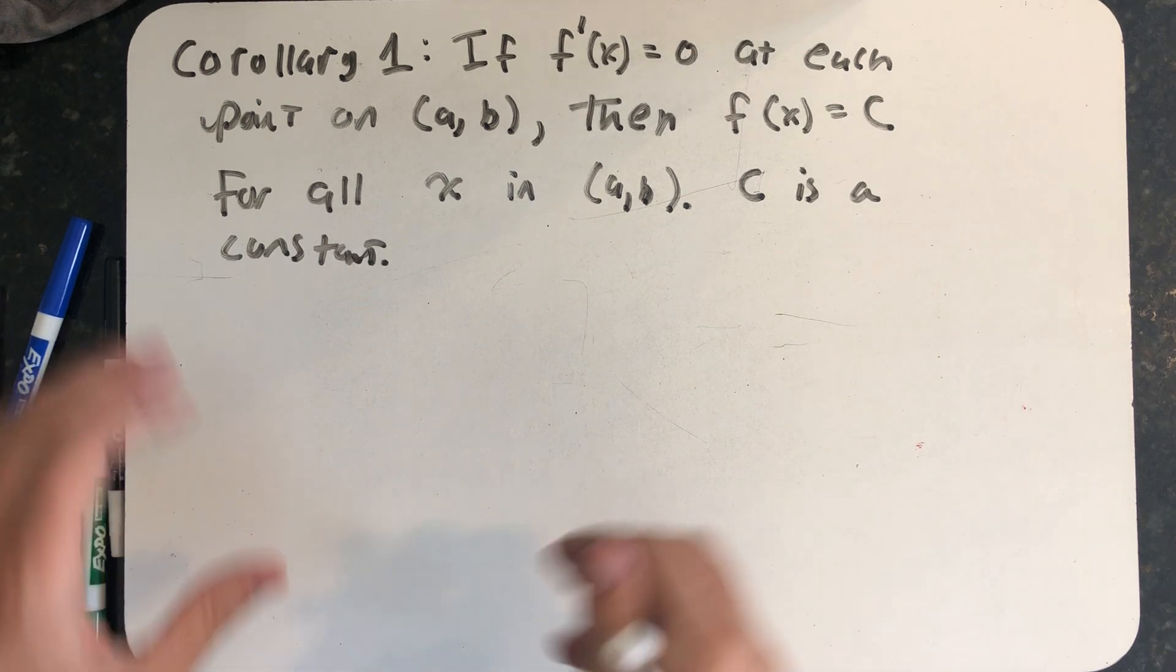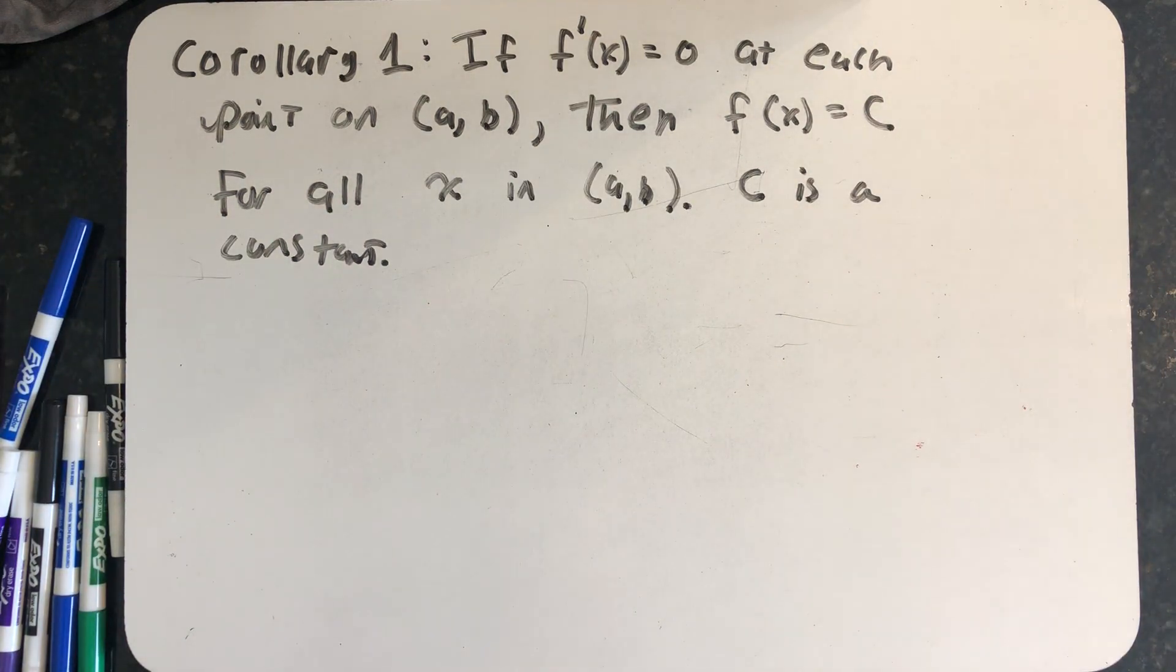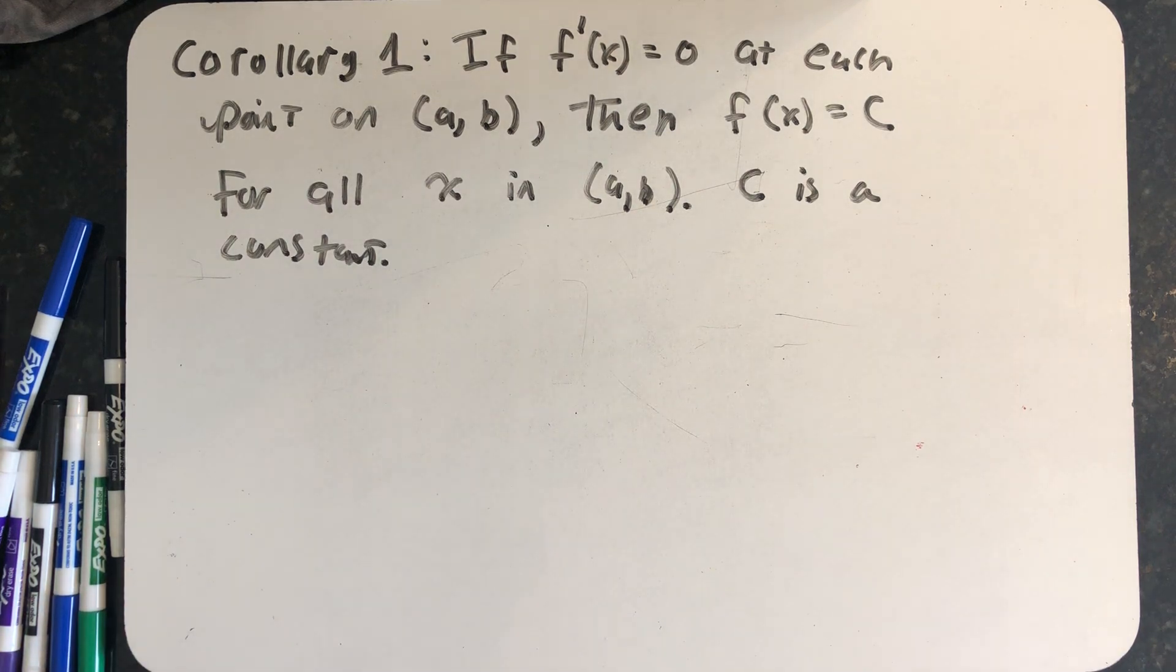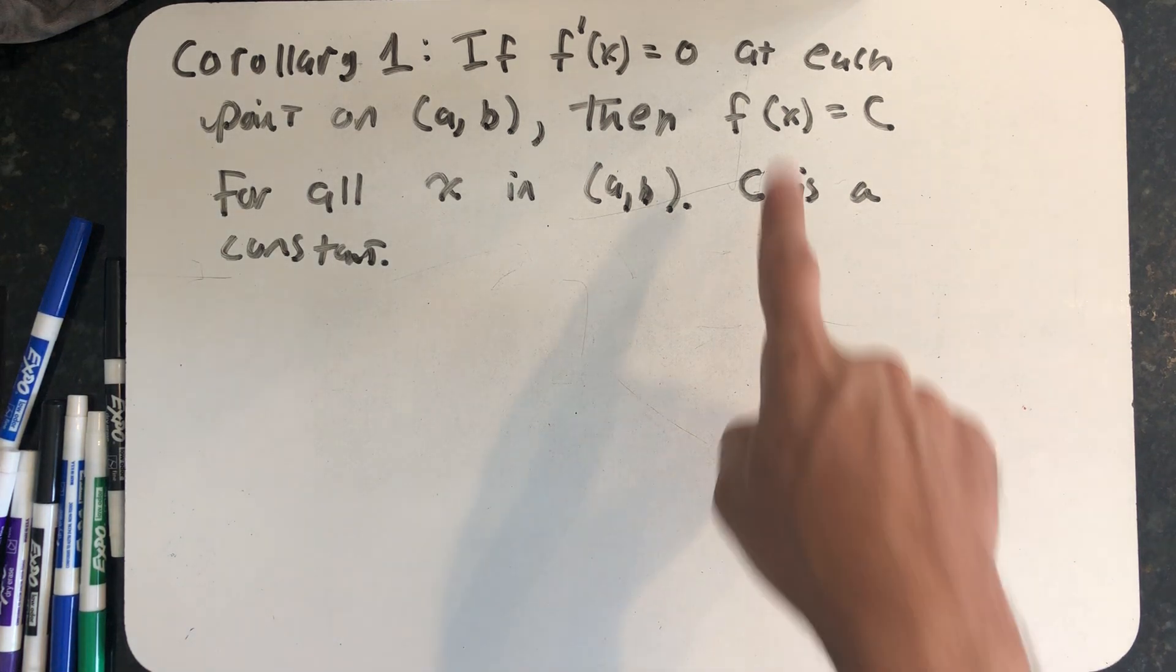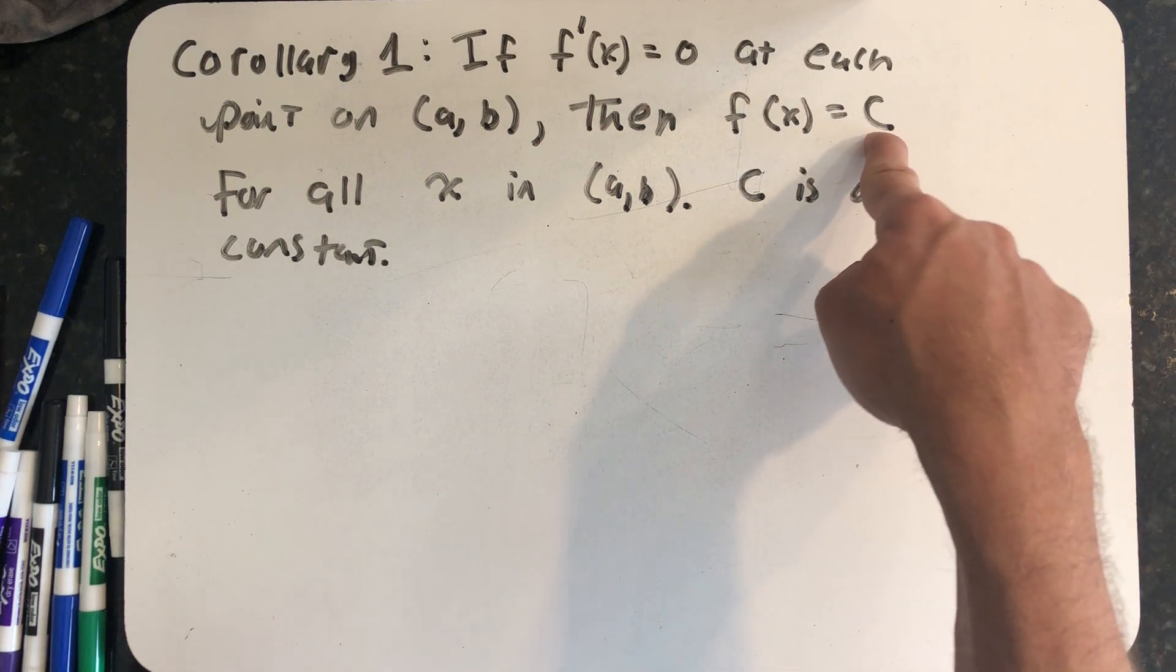But for now, the first corollary of the mean value theorem is that if I have a function whose derivative is zero over an open interval, then the function had to be a constant on that open interval. If we think about the derivative as an instantaneous rate of change, if the instantaneous rate of change is always zero over an interval, it means you didn't go anywhere, which means the y values never change. So they were equal to some constant.